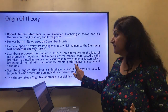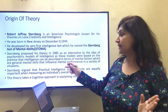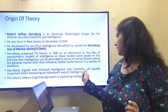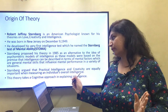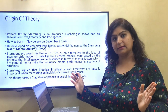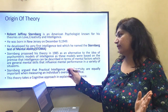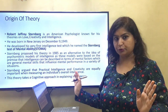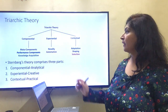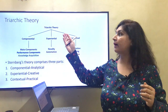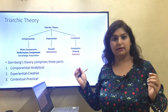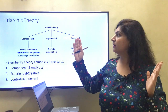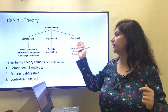Sternberg argued that practical intelligence and creativity are equally important when measuring an individual's overall intelligence. This theory takes a cognitive approach in explaining intelligence. His theory is famous by the name of the triarchic theory, and there are three aspects of intelligence: componential, experiential, and contextual.